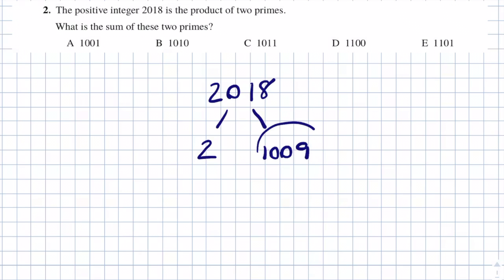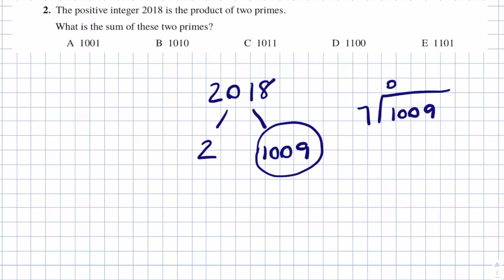We need to check whether 1,009 has any other factors. We know it's not a multiple of 2, 4, 6, 8, or 10 because it's not even. We can test for 3 or 9 by adding the digits: 1 + 0 + 0 + 9 = 10, and 10 is not a multiple of 3, so 3 can't be a factor. The only other number to try is 7. Dividing 1,009 by 7 gives a remainder of 1, so 7 is not a factor. Therefore we can assume that 1,009 is a prime number.